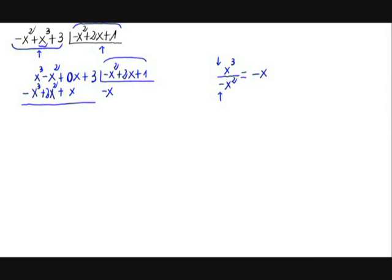x cubed minus x cubed will be 0. Minus x squared plus 2x squared will be x squared. 0x plus x is x. And then plus 3.